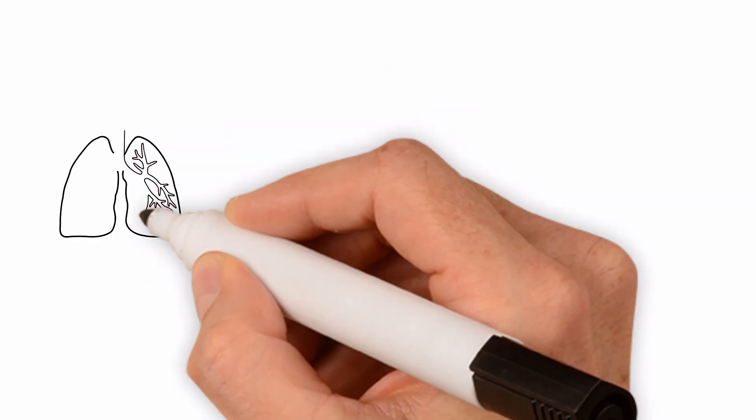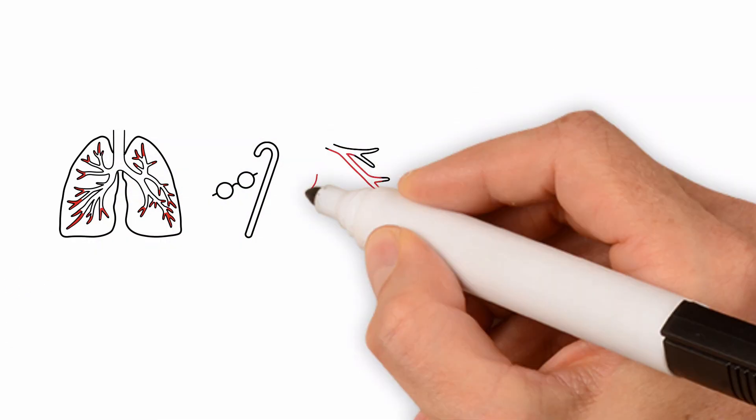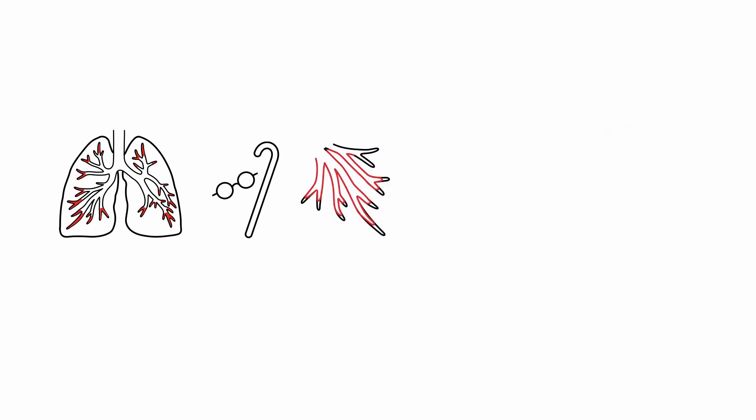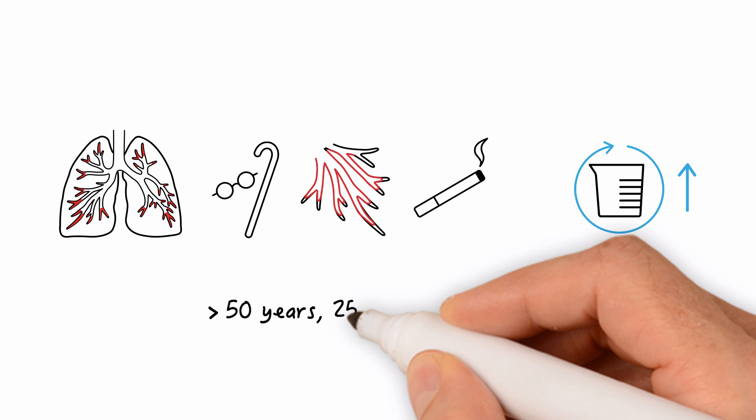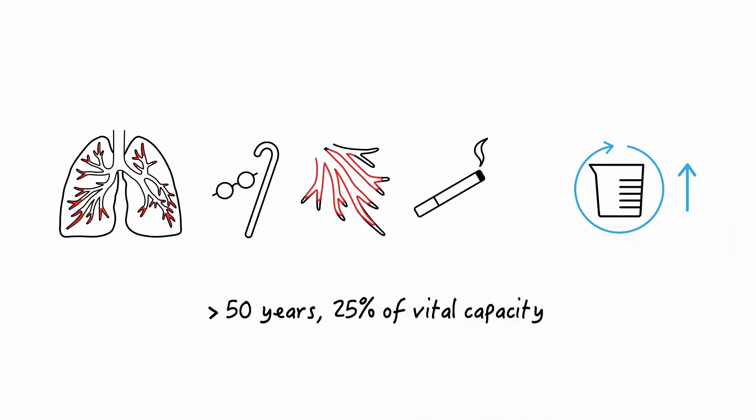With small airways disease, aging, premature closure of airways, or cigarette smoking, closing volume is increased. In patients greater than 50 years of age, closing volume may be 25% of vital capacity.